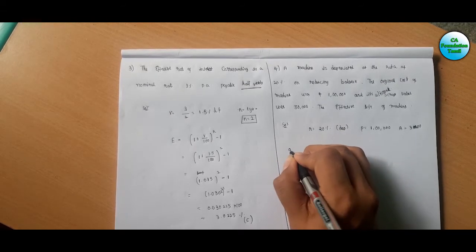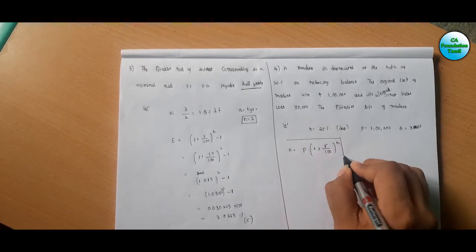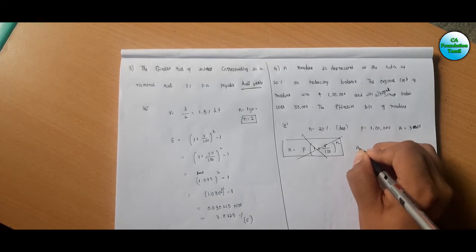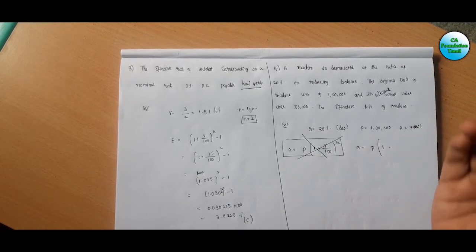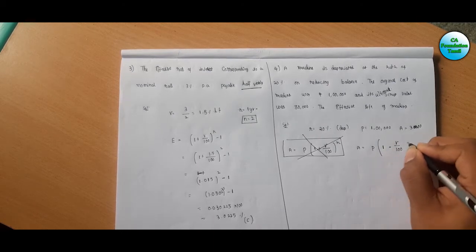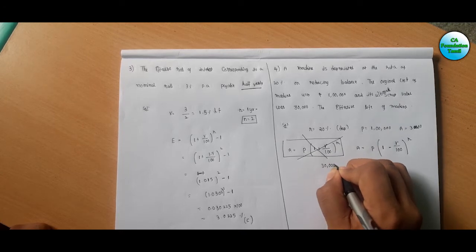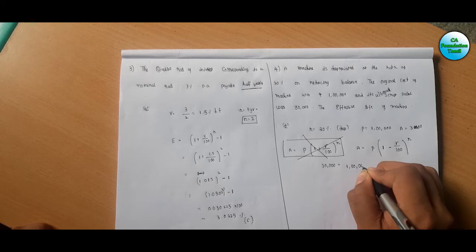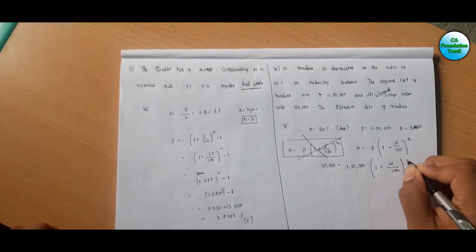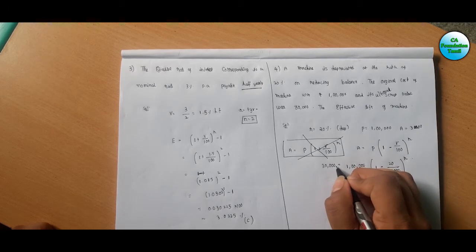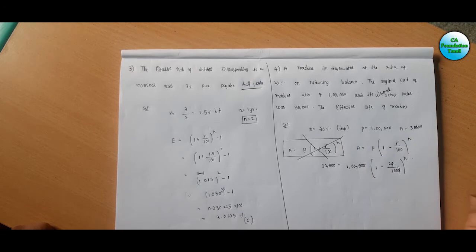The formula is: A is equal to P times (1 plus r by 100) to the whole power n — that is the normal compound interest formula. But for depreciation, the formula becomes: A is equal to P times (1 minus r by 100) to the whole power n. So: 30,000 equals 1 lakh times (1 minus 20 divided by 100) to the power n.